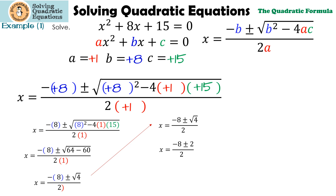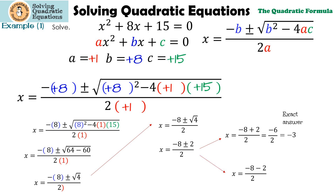Now we can separate it into two answers. Negative 8 plus 2 over 2, which is negative 6 over 2, which reduces to negative 3 — we call this an exact answer. In the second one, negative 8 minus 2 over 2, which is negative 10 over 2, which gives us negative 5. That's also an exact answer. So the solutions for x squared plus 8x plus 15 are negative 3 and negative 5.